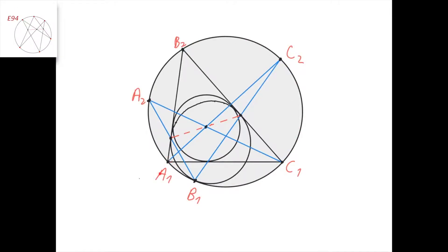Now let's call this point A1, this point B1, this C1, this C2, this B2, and this A2. And let's apply Pascal's theorem for the hexagon A1, B1, C1, C2, B2, A2.